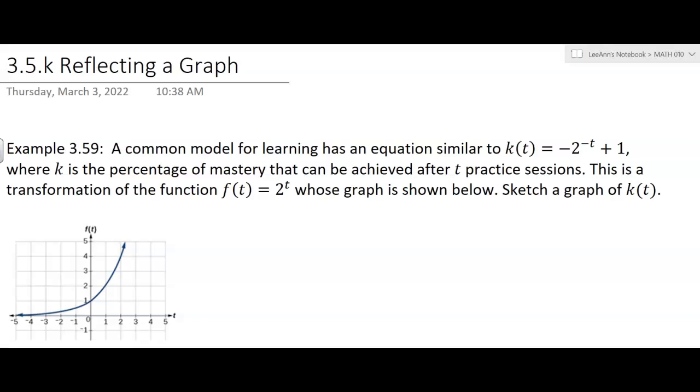We have a common model for learning that has an equation similar to this equation they give us, where k is the percentage of mastery that can be achieved after t practice sessions. This is a transformation of the function f of t. That function is right there, that's f of t.